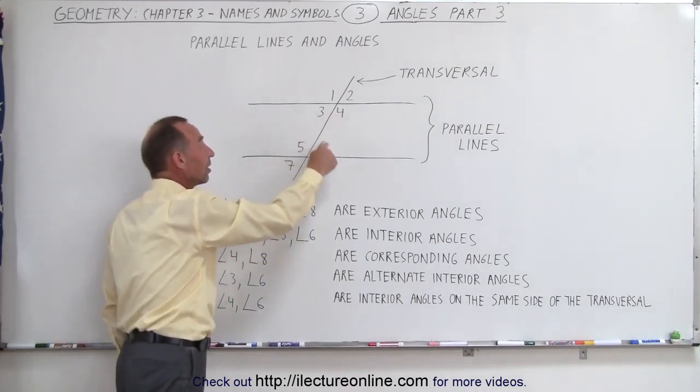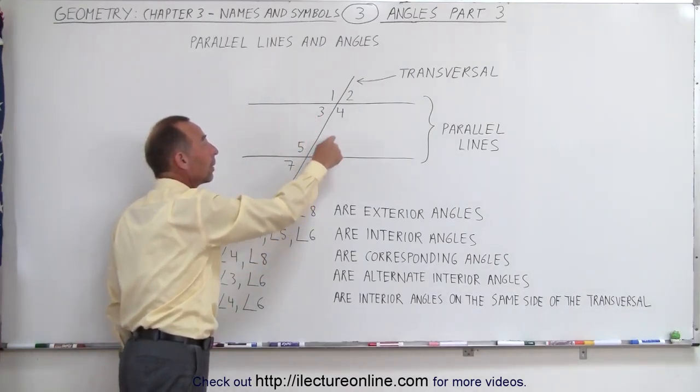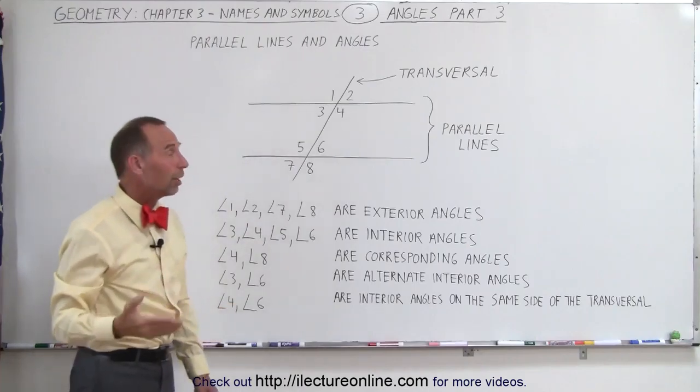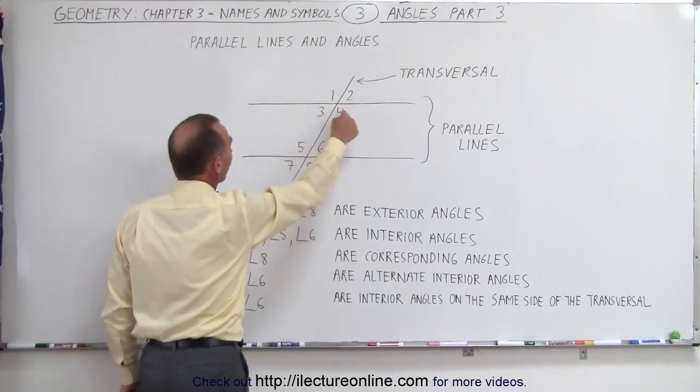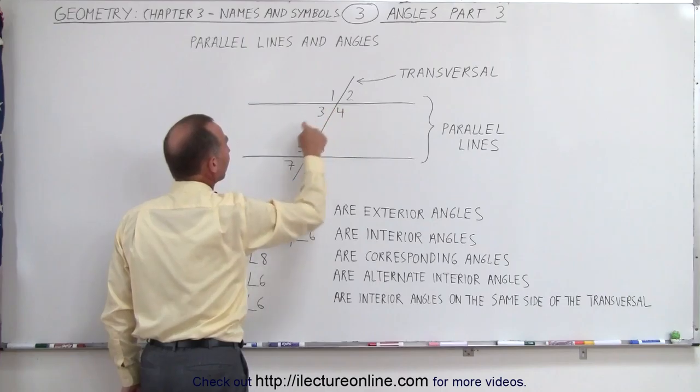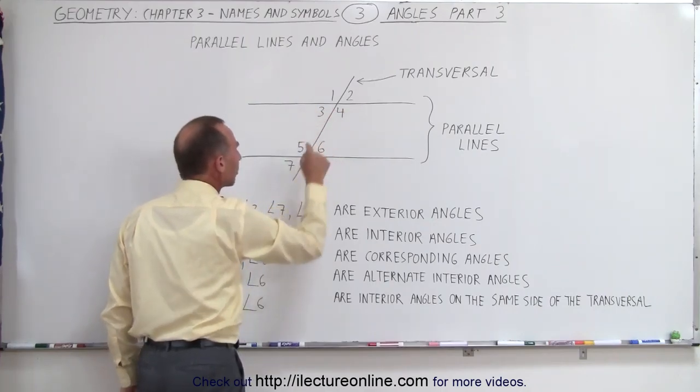Now since three and six are alternate interior angles, what about four and five? Sure enough, four and five are also alternate interior angles. And again, four and five have the same angular measure. Three and six have the same angular measure.